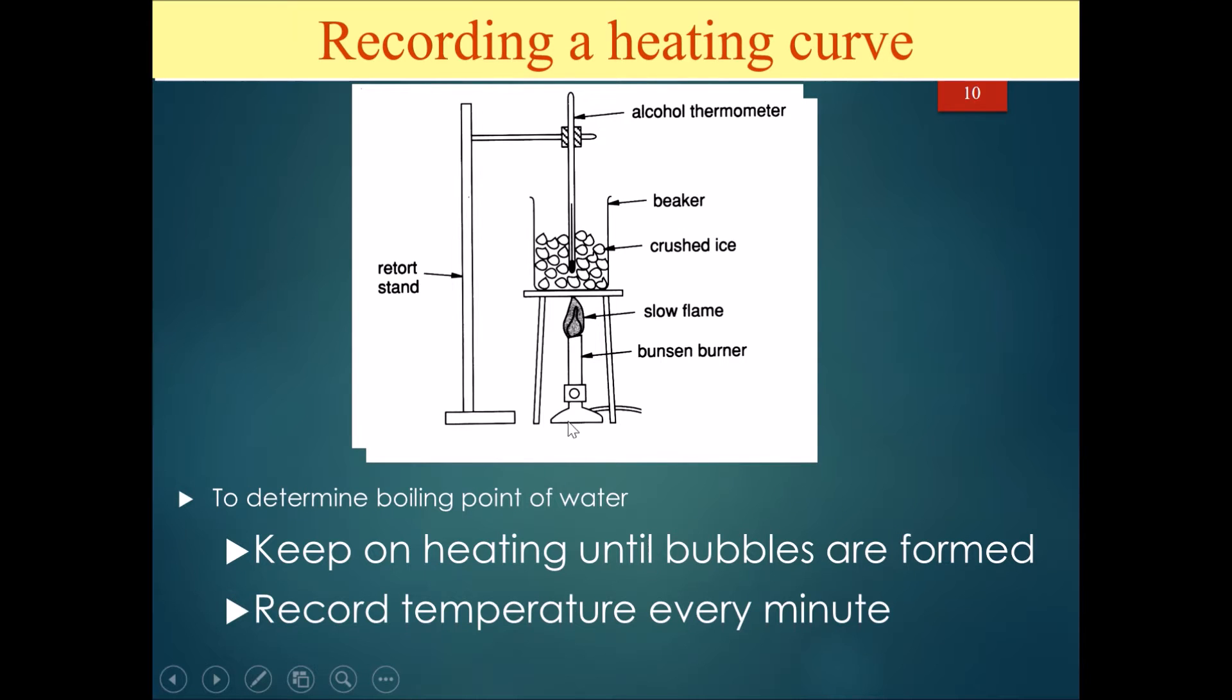Now here we have an example to determine the boiling point of water. So basically this setup is done where there's a thermometer set up on a retort stand. There's a beaker over here with a bunch of crushed ice at let's say minus five degrees. Then after that you put a Bunsen burner with a slow flame.